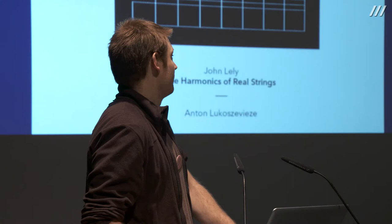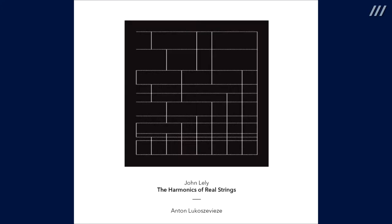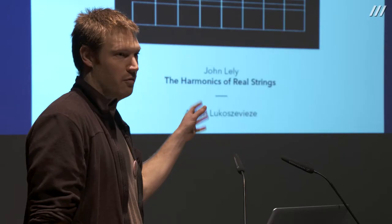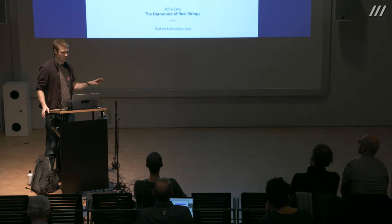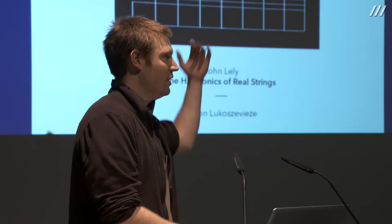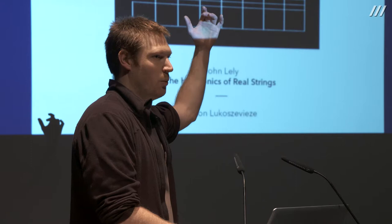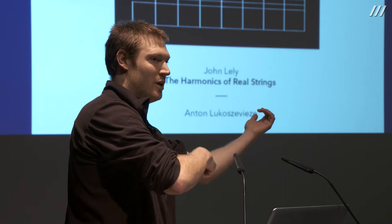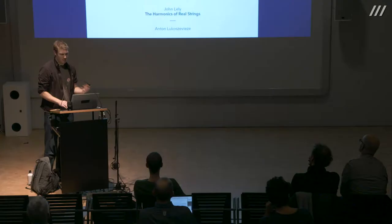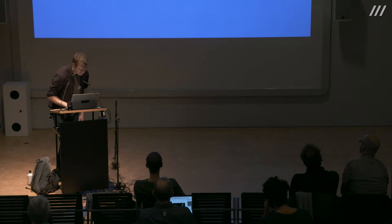One more example: a piece by composer John Lely from around 2006. It's not an improvisation, but he has a background in improvisation. It's also composed slightly in the Wandelweiser vein. It's really simple: take any string instrument, bow it lightly, and move your finger very slowly without applying pressure from one end of the string to the other. When you get to the end, the piece is finished — works for double bass, cello, or violin. What comes out is very complex. I'll play a short clip for cello.